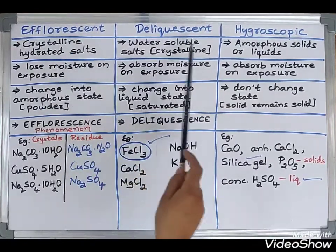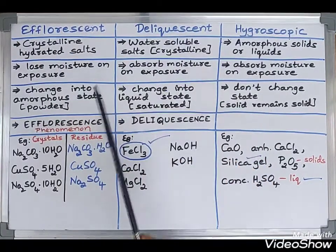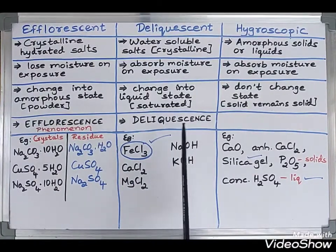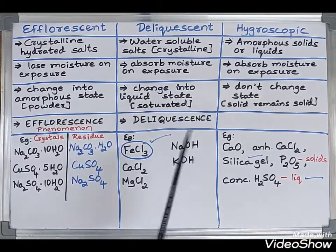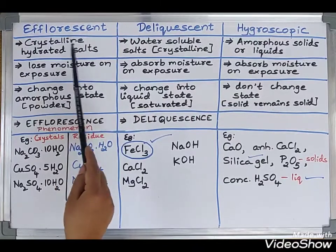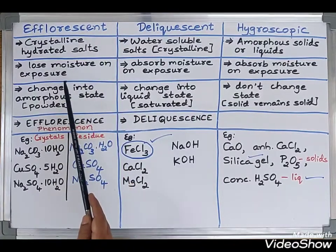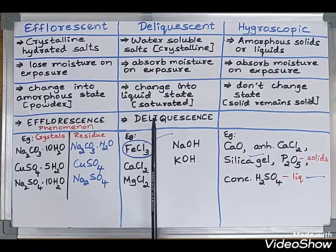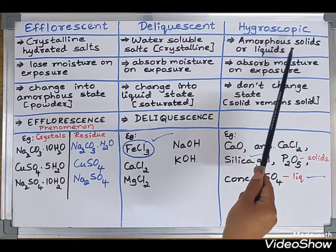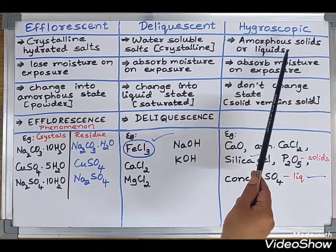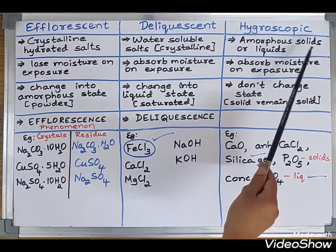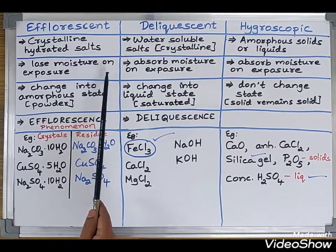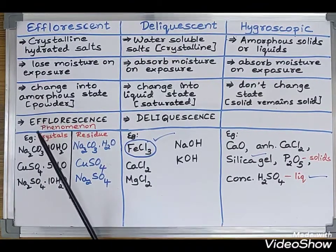We will learn about the three substances — efflorescent, deliquescent, and hygroscopic — in a little more detail. I have written it in the form of a table so that the comparative study will help you understand better and retain it in memory for longer. Efflorescent substances are crystalline hydrated salts; they are solids. Deliquescent substances are water-soluble crystalline solids that absorb moisture. Hygroscopic substances are amorphous — that is, fine powder — and they are either solids or liquids.